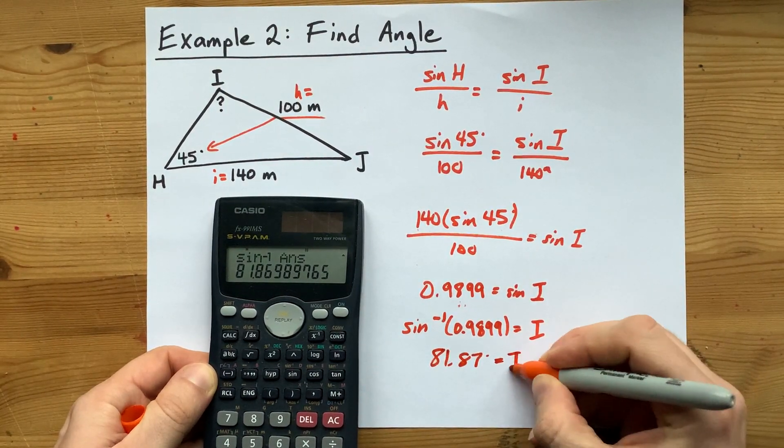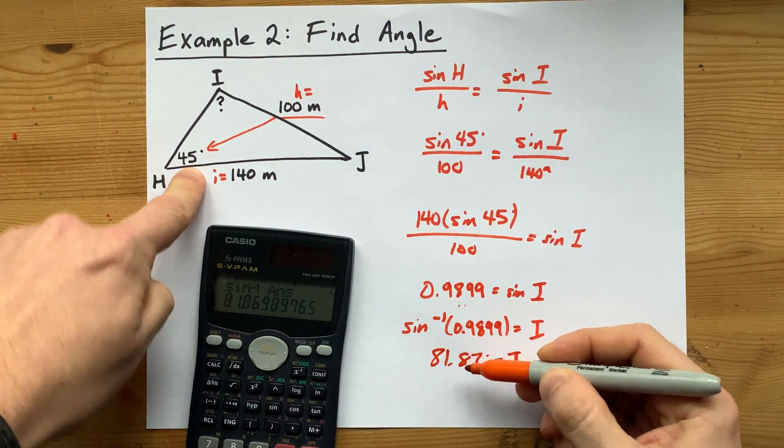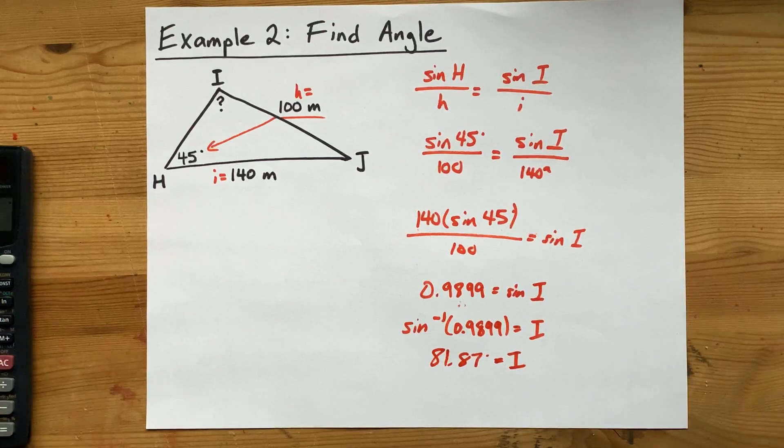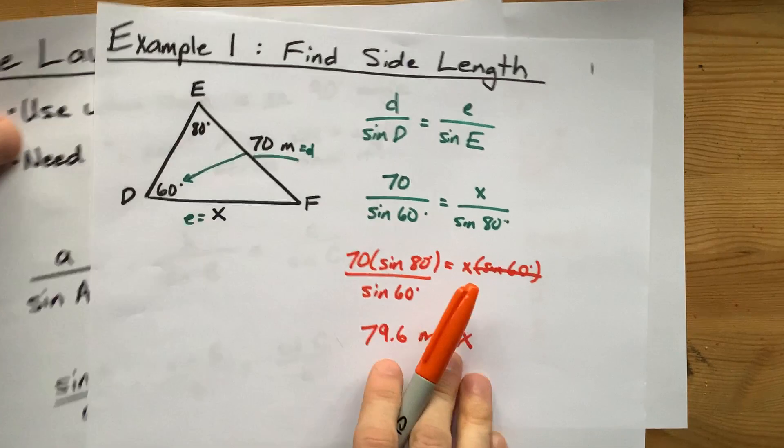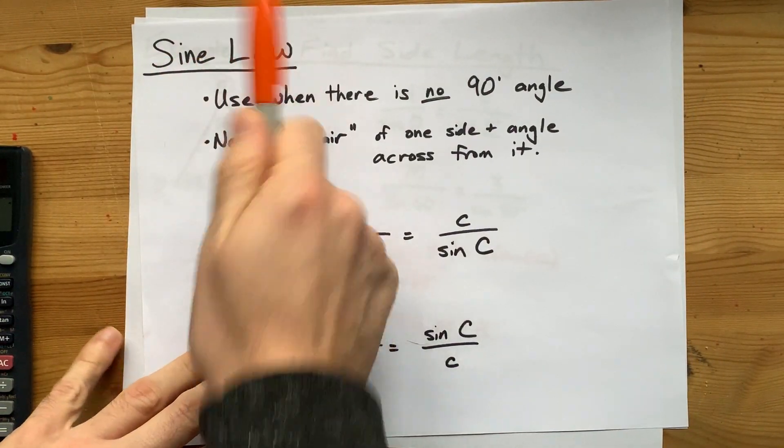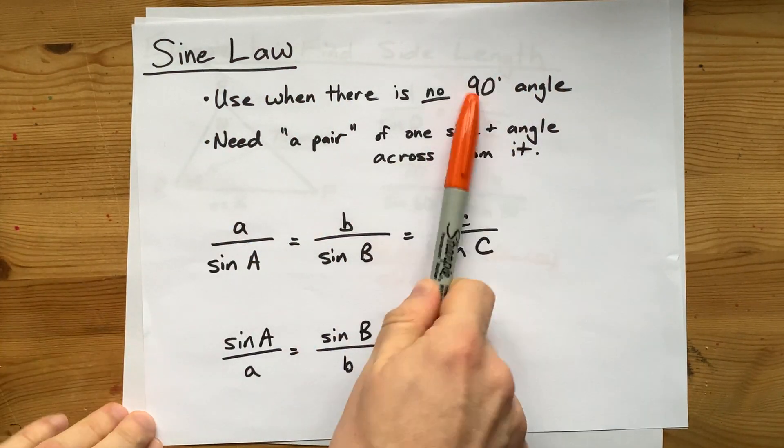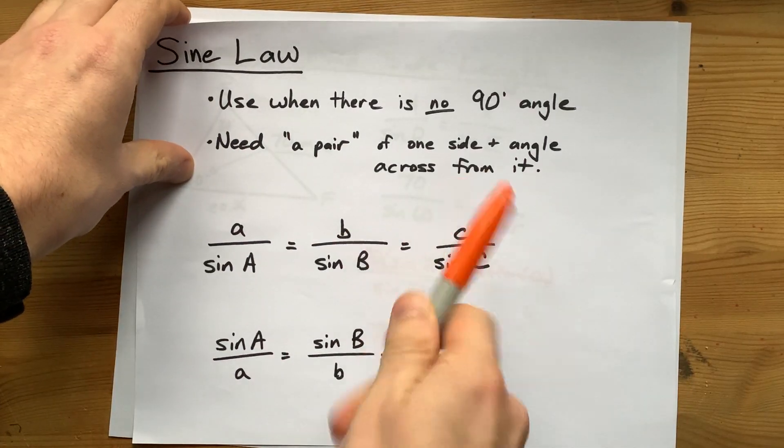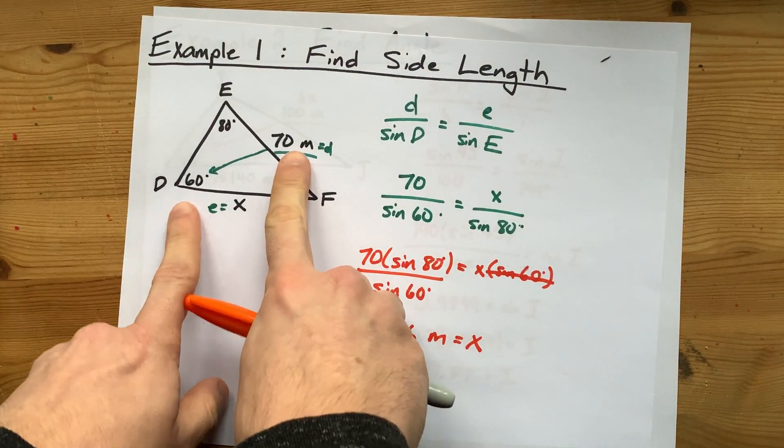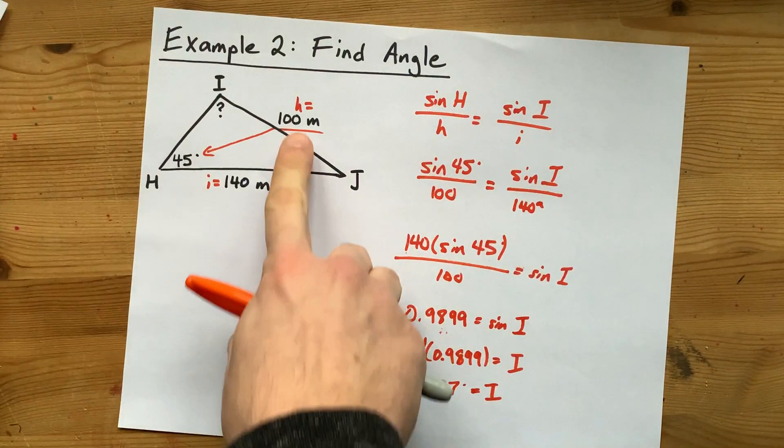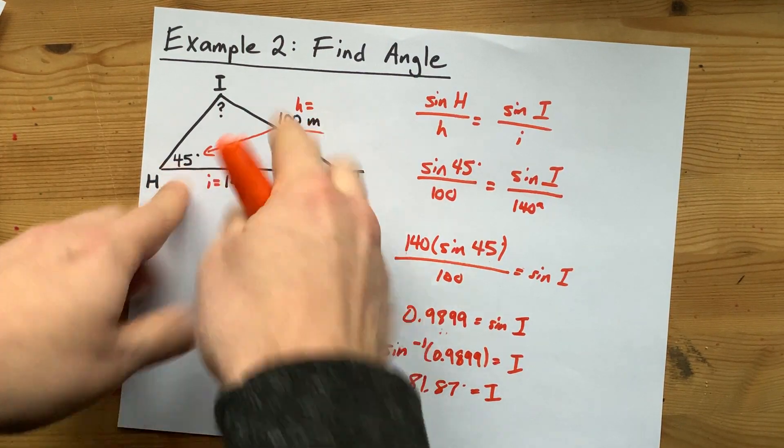Now that makes sense. That angle is bigger than 45 because it was across from a longer side than 45 was. Cool. So sine law works the same way whether you're solving for a length or an angle. And the point is you can go to this and use it when you don't have a 90 degree angle in your triangle and you have a pair of a side and an angle across from it. We knew those two numbers, we could use sine law. We knew a side and the angle across from it here, we can use sine law.